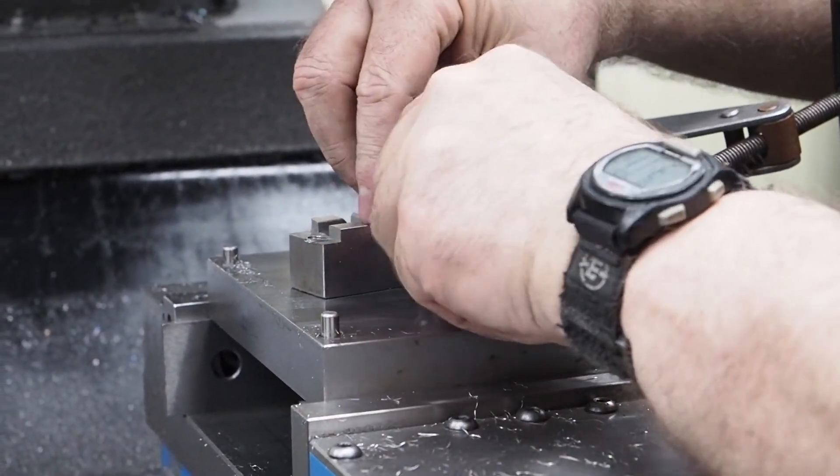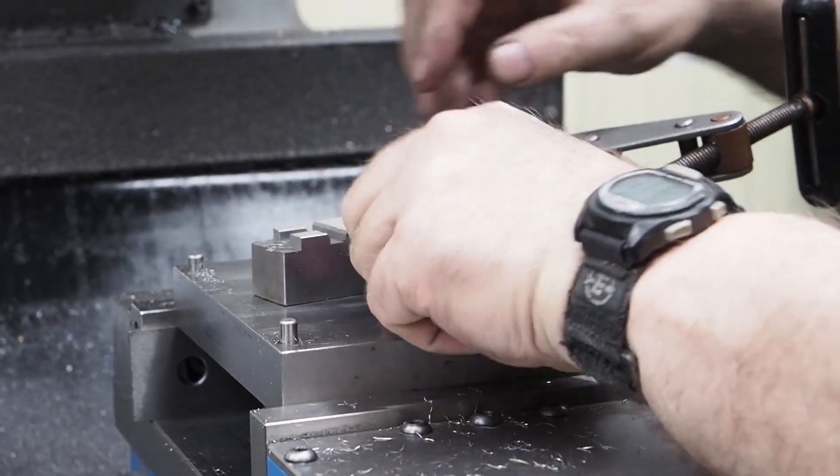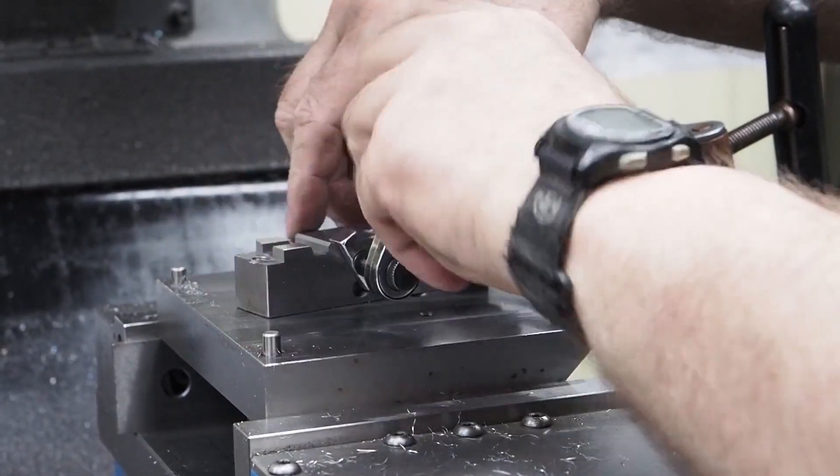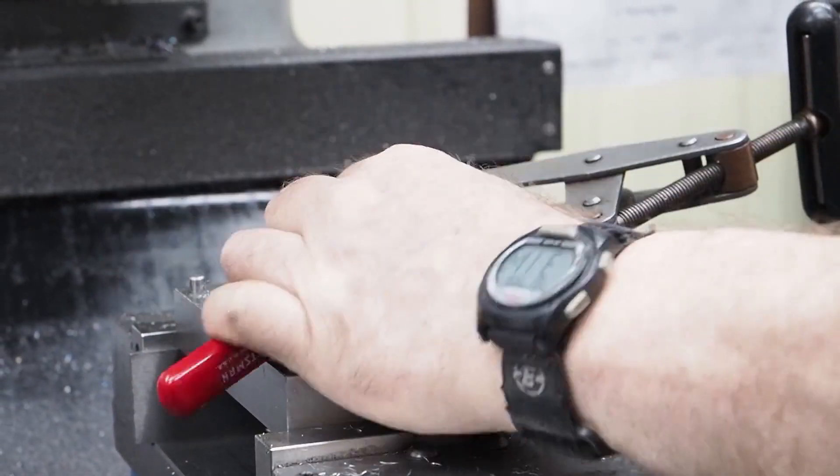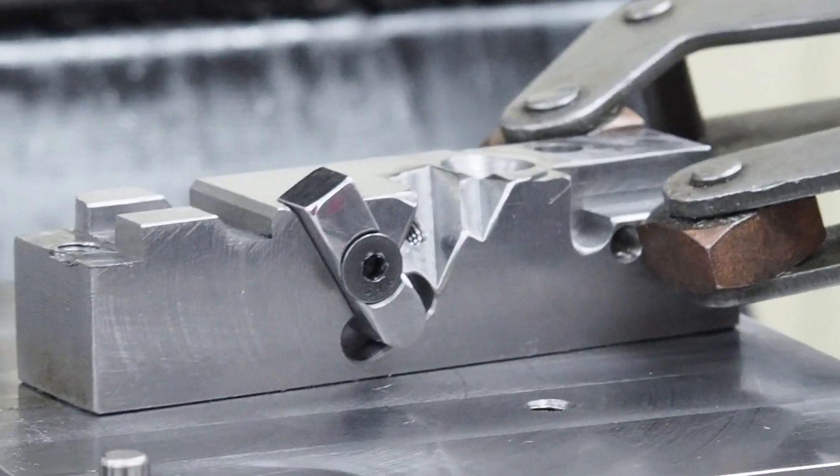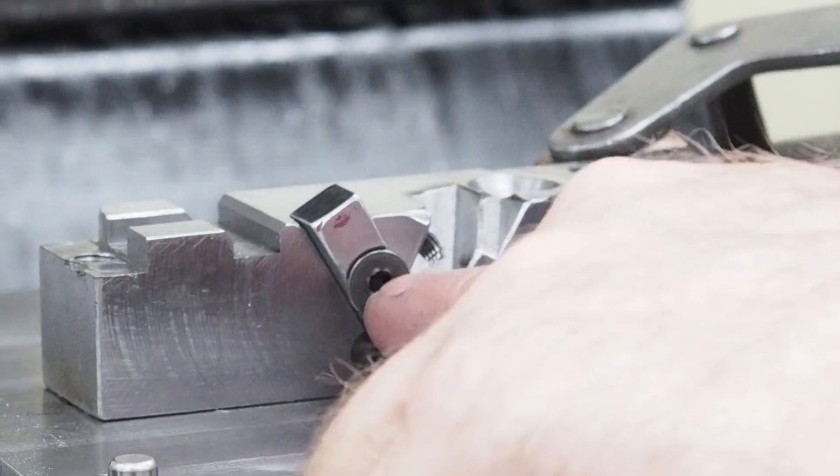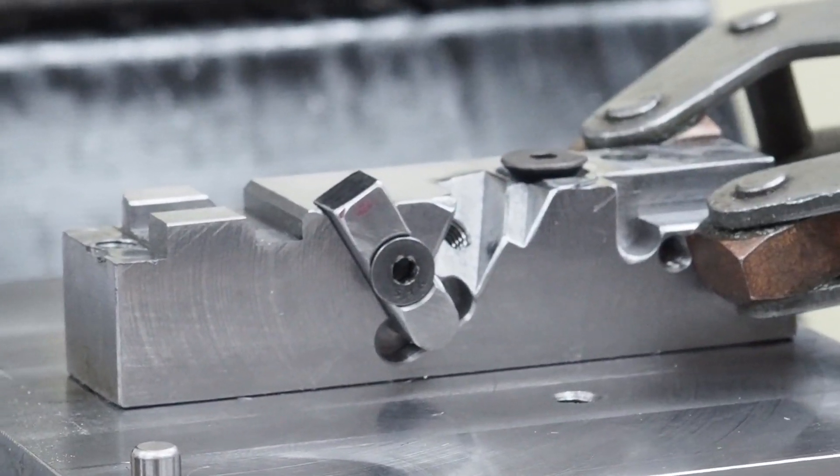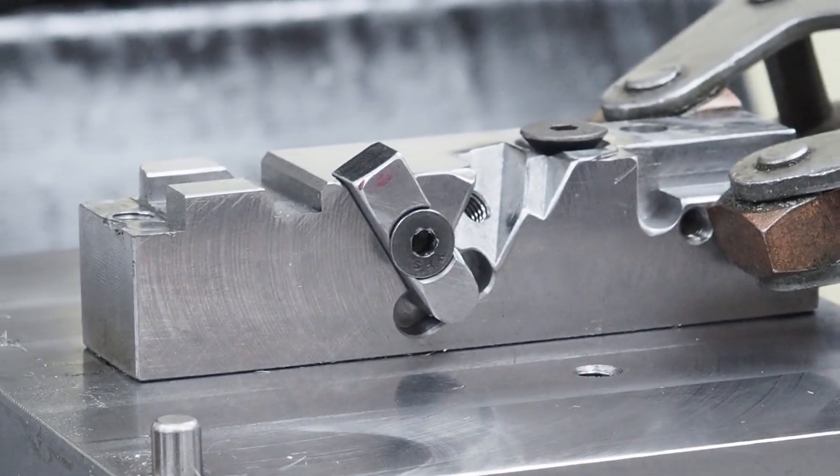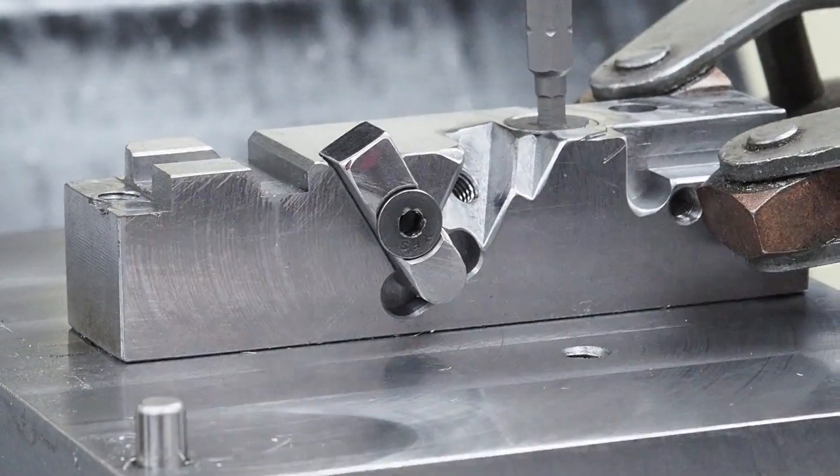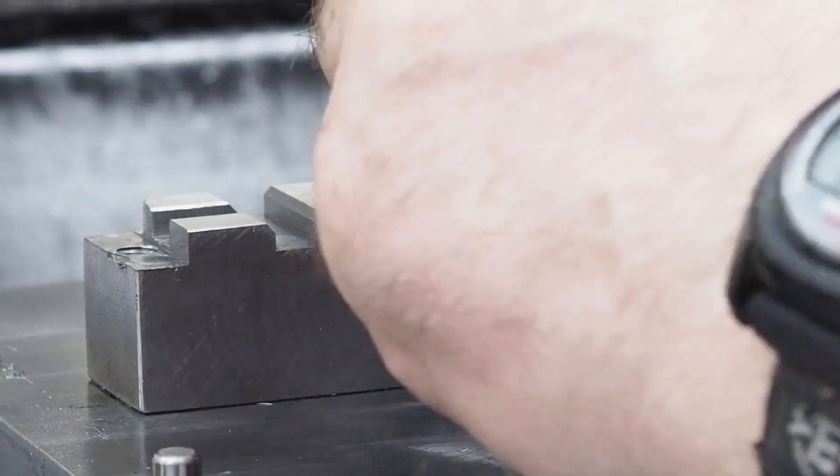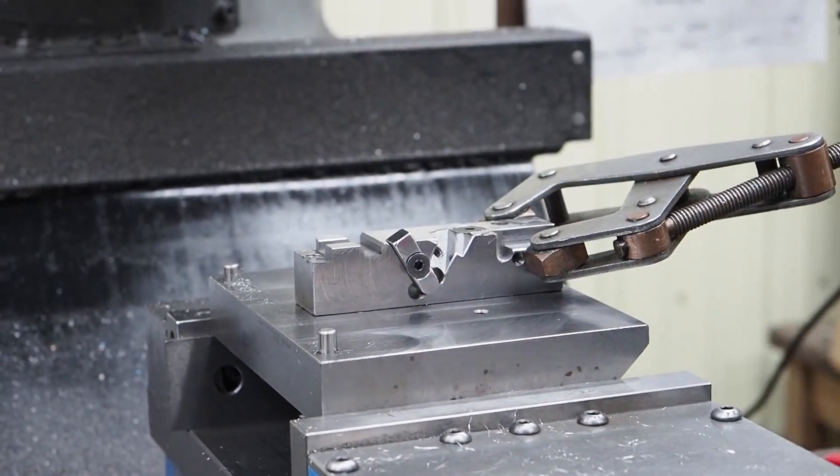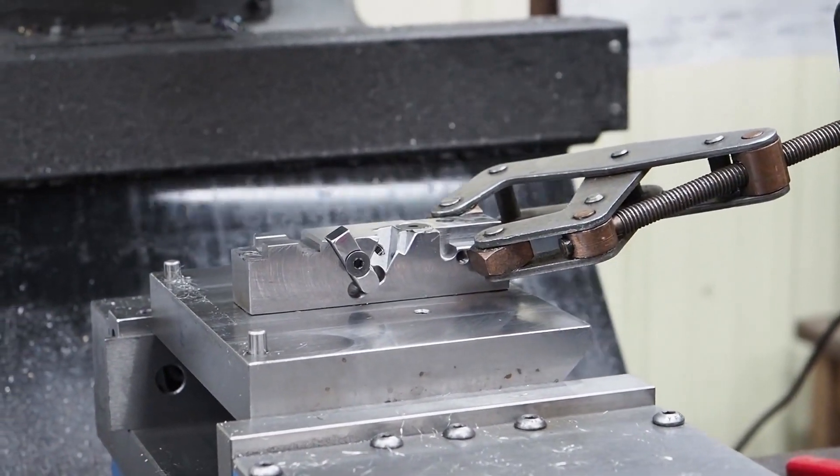Next thing that we want to do is set this and cut that first angle. We have this slot that holds the part in place at the proper angle. I have a flat head screw over here. It's locked somewhat by the pivot point there, but then when I put this screw in right there, it locks it in real good.